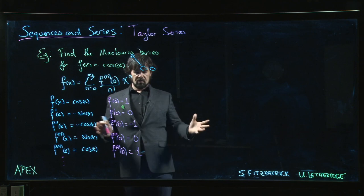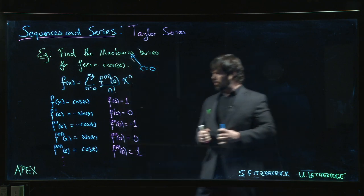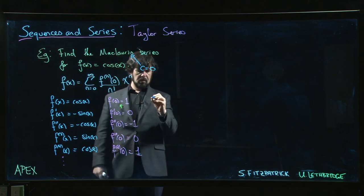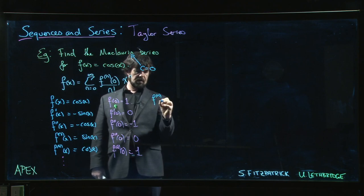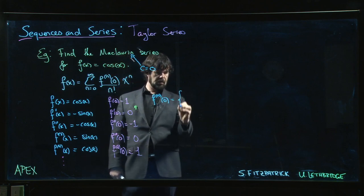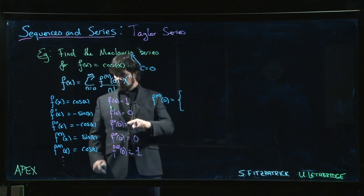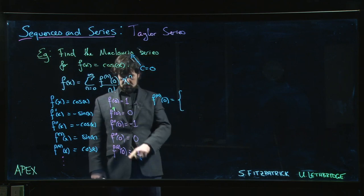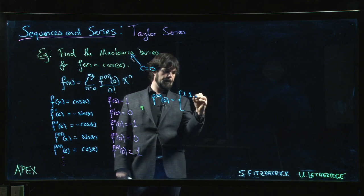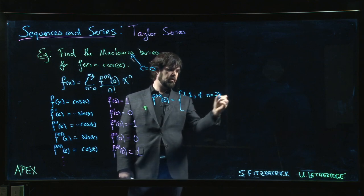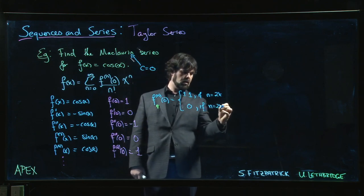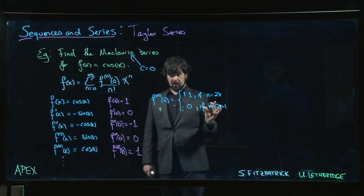But we want to actually write down a formula to express this because we want to be able to put it into this series notation. So we kind of play around and we say, okay, what can we say about this? We know that the nth derivative at 0 is equal to, well, here's our first step. If n is even, 0, 2, 4, we get 1 or minus 1. So it's plus or minus 1 if n is equal to 2k. It's 0 if n is 2k plus 1.